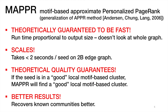Our method for doing this is an algorithm called MAPPR, short for Motif-Based Approximate Personalized PageRank. Here's the clickbait for it: it's theoretically guaranteed to be fast, it doesn't have to look at the entire graph, it scales to networks with billions of edges, it has theoretical quality guarantees in terms of the output clusters, and it gives better empirical results in practice.